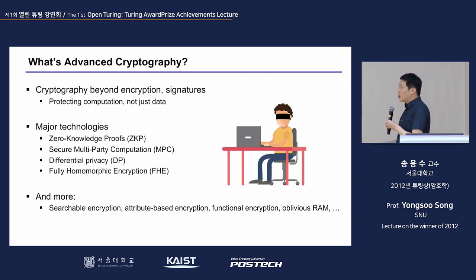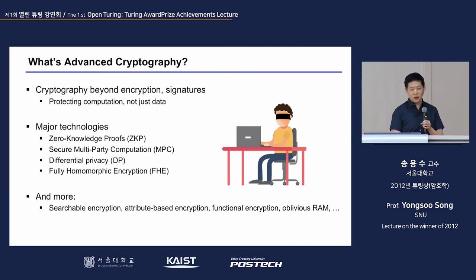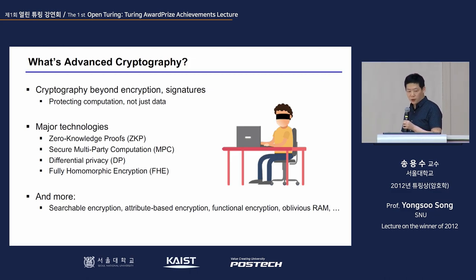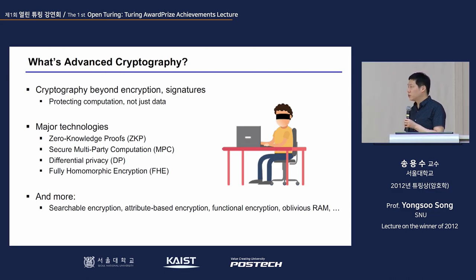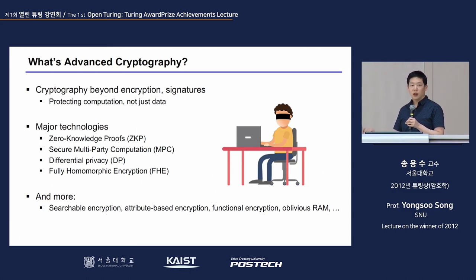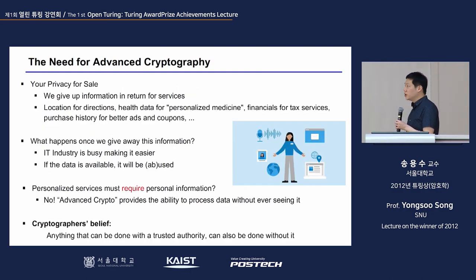What is advanced cryptography? It goes beyond encryption and signatures — it wants to protect computation itself, not just data. Key representative technologies of advanced cryptography include: zero knowledge proofs, secure multi-party computation (MPC), differential privacy, and fully homomorphic encryption.